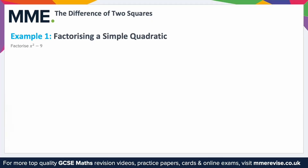Example 1: factorising a simple quadratic. So we're trying to factorise x squared minus 9. You can see this is in the form a squared minus b squared — so in this case a is x. This is a difference of two squares, where we know that we can factorise this to a minus b times by a plus b.